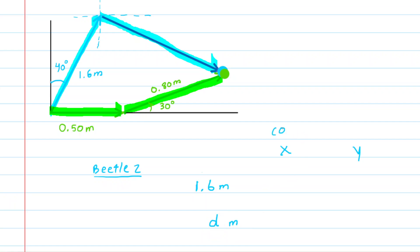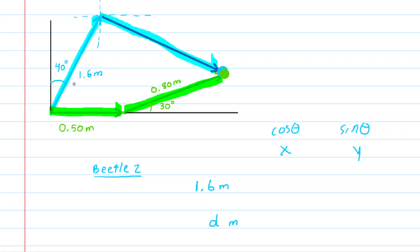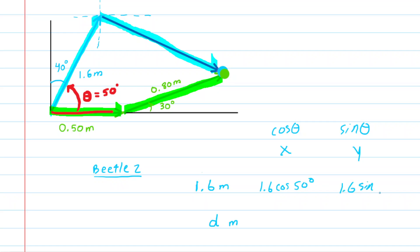For the x component we'll multiply by the cosine of an angle; for the y, we'll use the sine. Take a look at the first vector — you've got to be careful. Some people would think the angle is automatically 40 degrees, but you want to make sure you're measuring from the positive x-axis. That angle from the positive x-axis is actually 50 degrees, because the y and x-axis form a 90-degree angle. So you'd use 50 degrees: 1.6 meters times the cosine of 50 degrees for x, and 1.6 meters times the sine of 50 degrees for y.